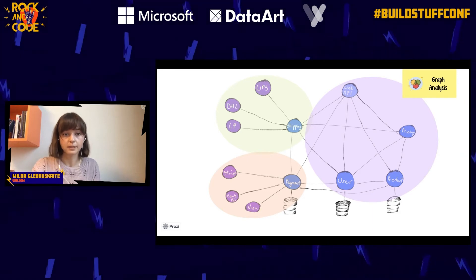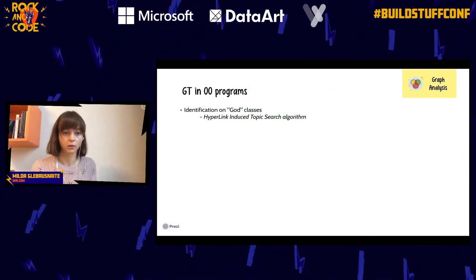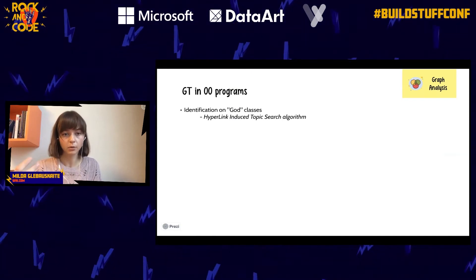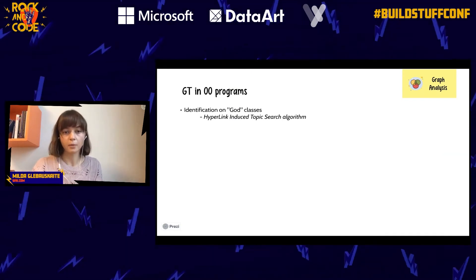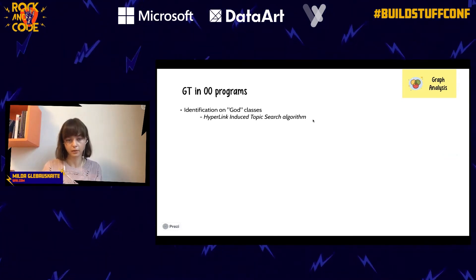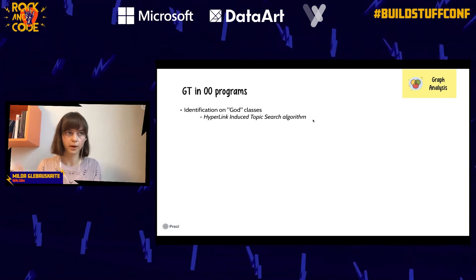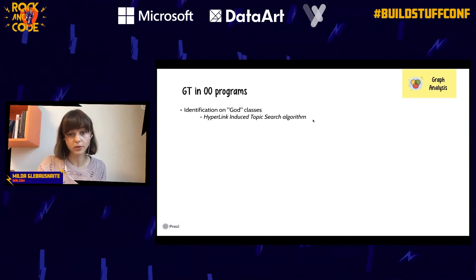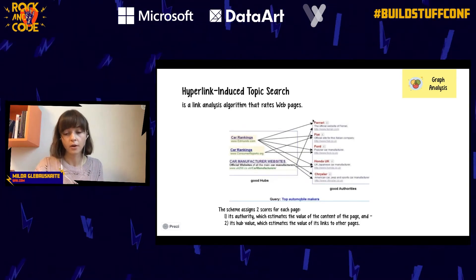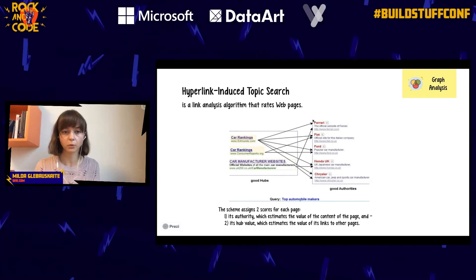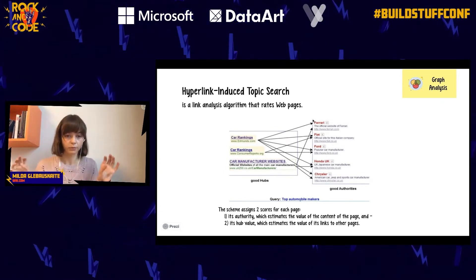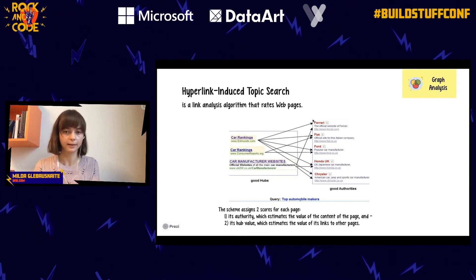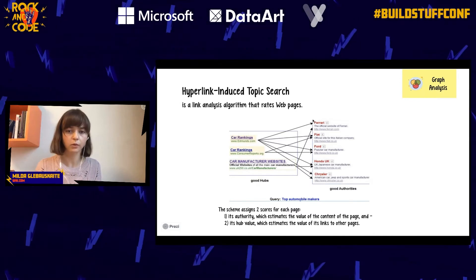Very similar analysis can be applied to object-oriented code — it's easy to represent as a graph: classes are nodes, connected if they call each other. One interesting algorithm I found identifies 'god classes' — classes that are very busy, called by many and calling many others. This is actually the same algorithm used for web page ranking: a page has a good hub value if it links to many high-ranked pages, and a good authority value if it's linked to by many high-ranked hubs.